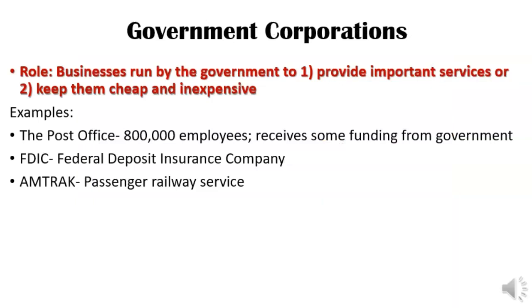Finally, you have government corporations — businesses run by the government either because the service is too important to leave unmanaged or to keep the service cheap and inexpensive. Think of the post office or Amtrak. No private provider would want to run Amtrak, so the government does it to make sure that service is provided, especially on the East Coast where rail traffic is extremely important for passengers.